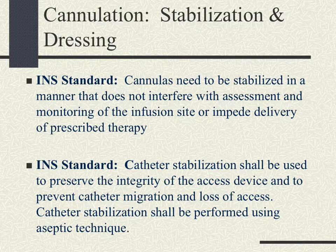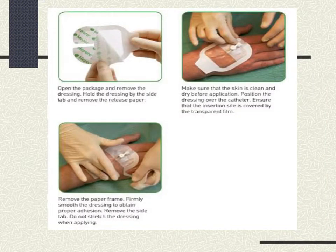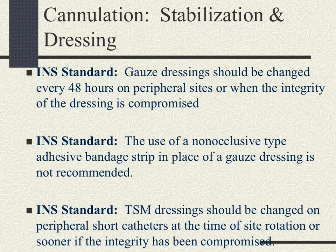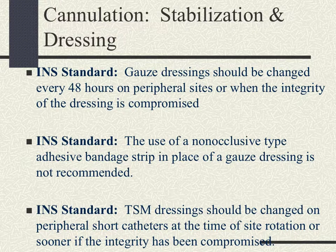For the dressing, there are two methods: gauze dressing secured with tape, or a transparent semi-permeable membrane dressing — which is the preferred method. Per INS standards, gauze dressings should be changed every 48 hours on peripheral sites or when the integrity of the dressing is compromised. The use of non-occlusive adhesive banded strips in place of gauze dressing is not recommended. TSM dressings should be changed on peripheral short catheters at the time of site rotation or sooner if the site becomes compromised.